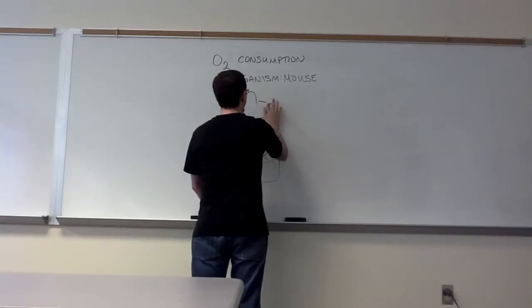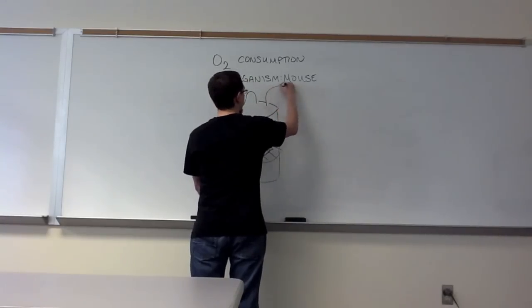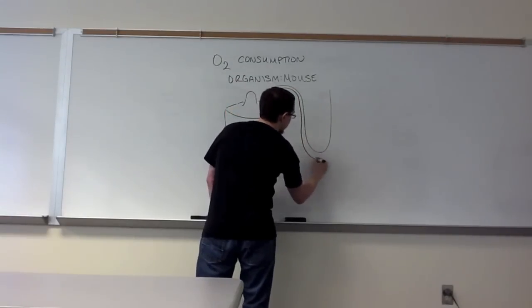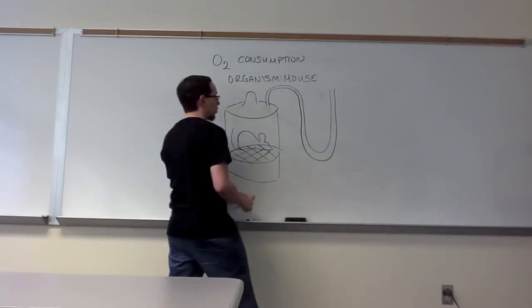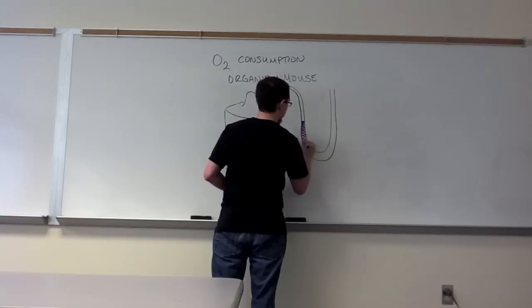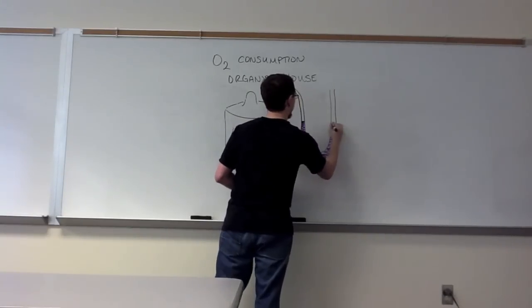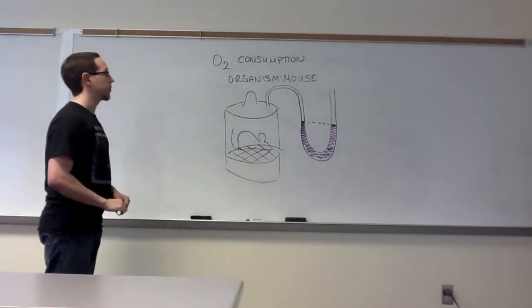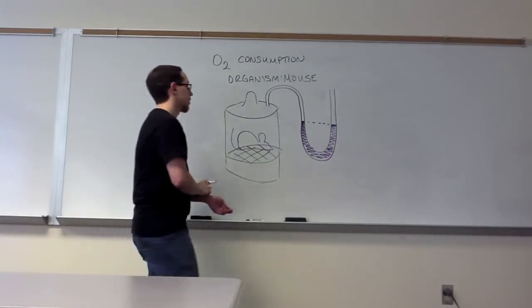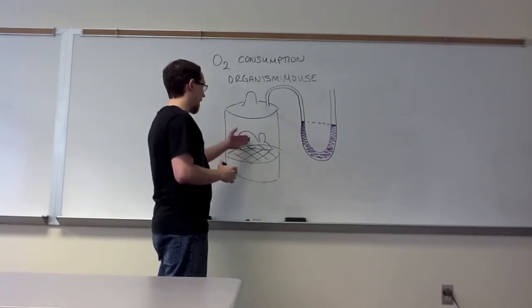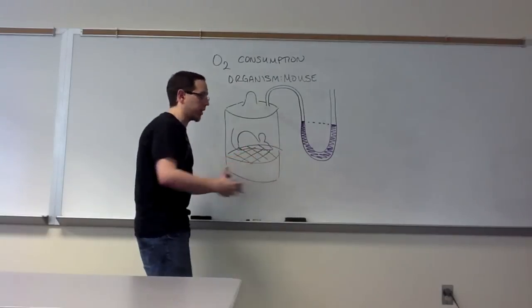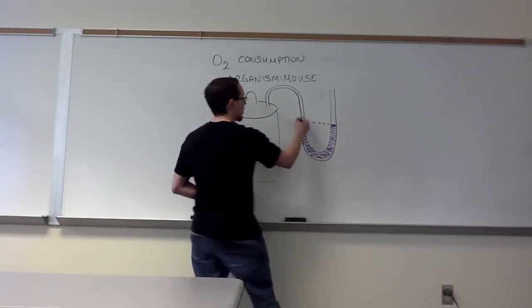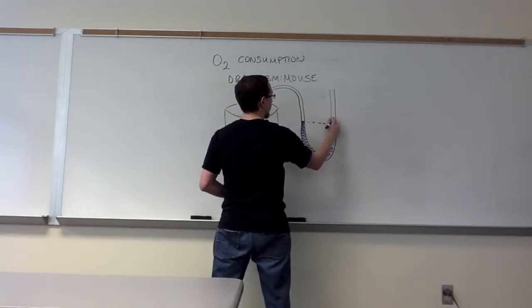Inside this apparatus, we had a series of tubes, plungers, and other things coming out. One of the more important ones was this piece of tubing that had water in it. The water is level on both sides initially. As the mouse needs to perform cellular respiration, it will inhale oxygen, and that will create a vacuum that will cause this tubing to act like a straw. The water level will start to rise in this direction and lower in this direction.